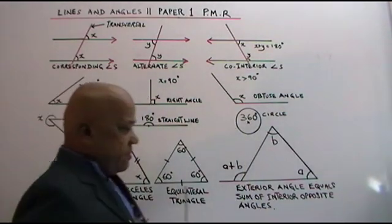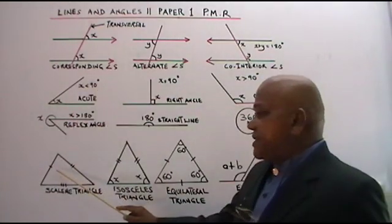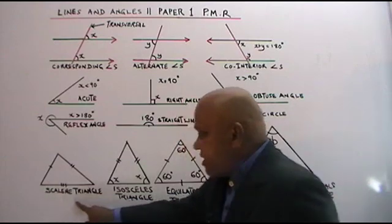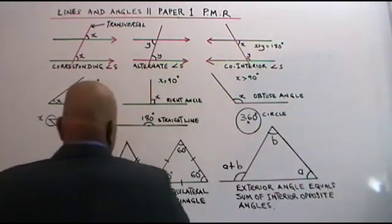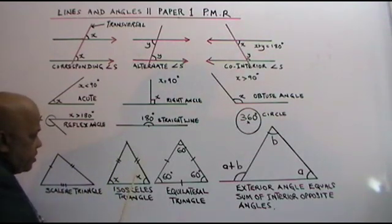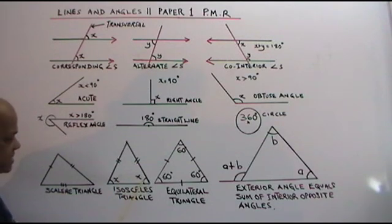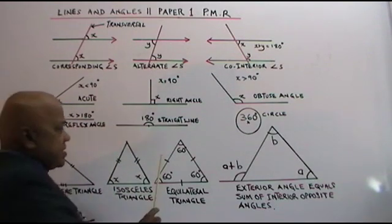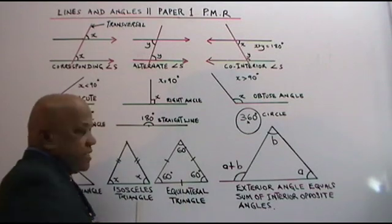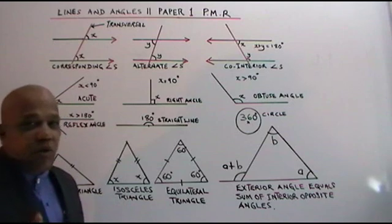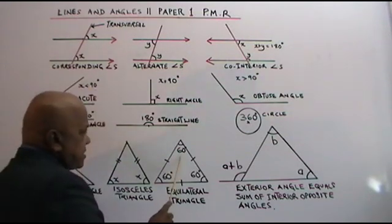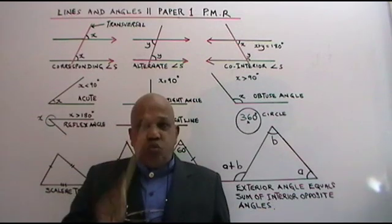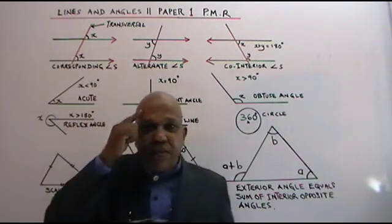Now, what other additional information do we need? If a triangle has three unequal sides, you call it a scalene triangle. If two sides are equal, you call it an isosceles triangle, and the base angles of an isosceles triangle are always equal. When all three sides are equal, you call it an equilateral triangle — all three angles are 60, 60, 60. The sum of the angles of any triangle is 180 degrees. Very, very important.